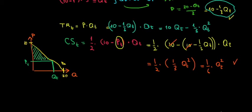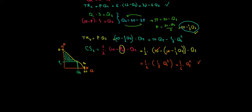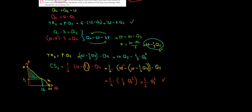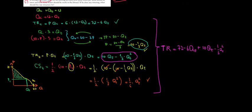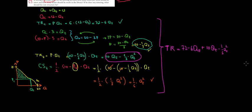Now we can assemble total revenue from all three sources — clerking, tutoring, and the consumer surplus of tutoring. Total revenue equals: (72 - 6·QT) + (10·QT - (1/3)·QT²) + (1/6)·QT². This is a function in terms of one variable, QT, which is exactly what we were looking for.